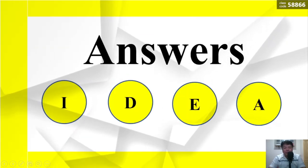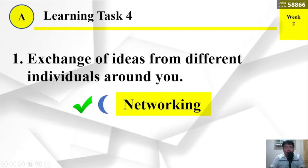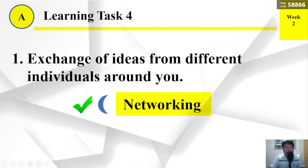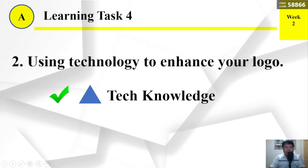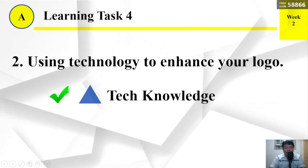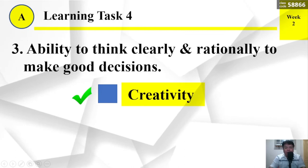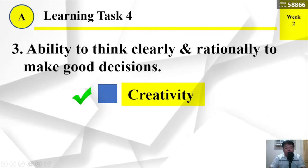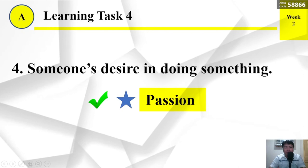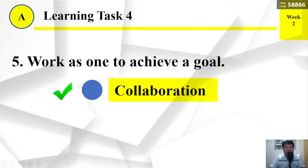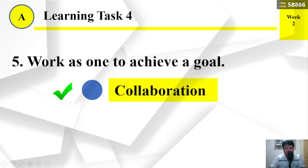Here are the answers. Number 1 — exchange of ideas from different individuals around you: the correct answer is quarter moon — Networking. Number 2 — using technology to enhance your logo: the correct answer is triangle — Tech knowledge. Number 3 — ability to think clearly and rationally to make good decisions: the correct answer is square — Creativity. Number 4 — someone's desire in doing something: the correct answer is star — Passion. Number 5 — work as one to achieve a goal: circle — Collaboration is the correct answer.